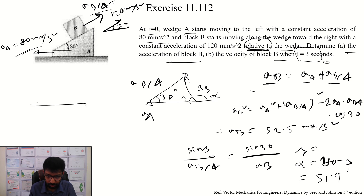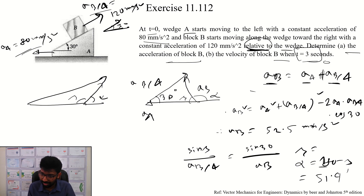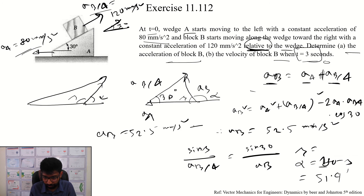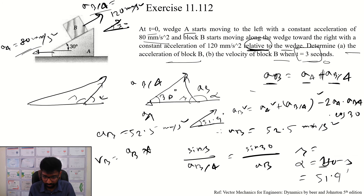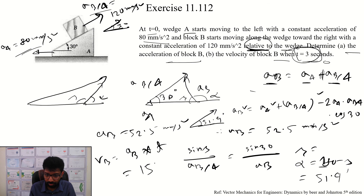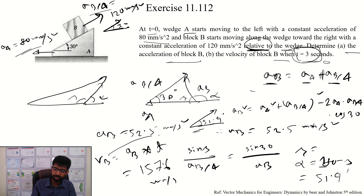So the acceleration of block B is 52.5 mm per second squared, and the direction angle is 51.4 degrees. The velocity of block B is determined in the same direction. So the final answers: v_B equals 1 mm per second in the 8th direction, and a_B equals 3 per second squared in the same direction. Thank you.